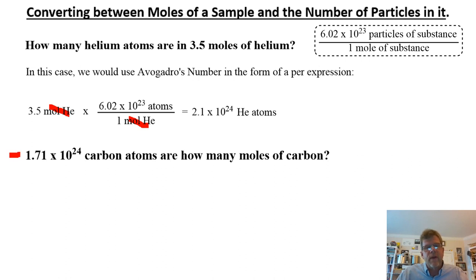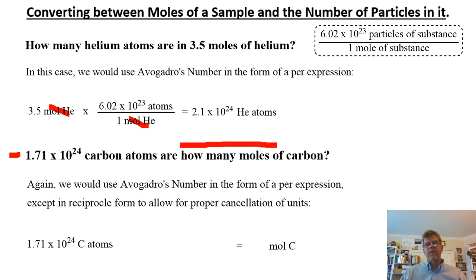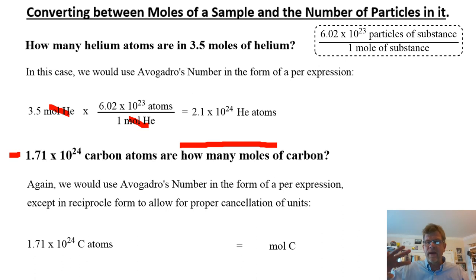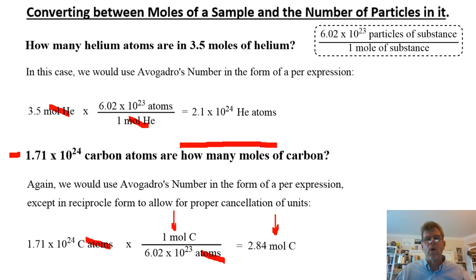Next: 1.71 times 10 to the 24th carbon atoms are how many moles of carbon? We're going to use Avogadro's number again, but we have to use its reciprocal. Per expressions are very sturdy — they can be used in either reciprocal form. We place Avogadro's number in the opposite orientation from before so that we cancel out the number of atoms and end up with moles. Then, and only then, do we reach for our calculator — and it comes out to 2.84 moles of carbon.